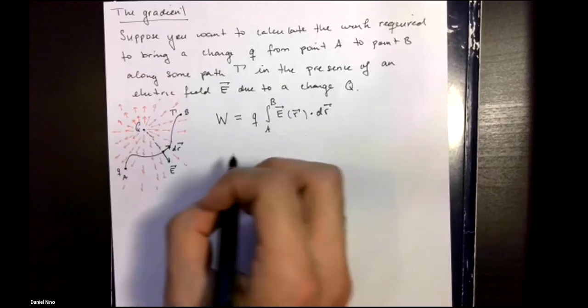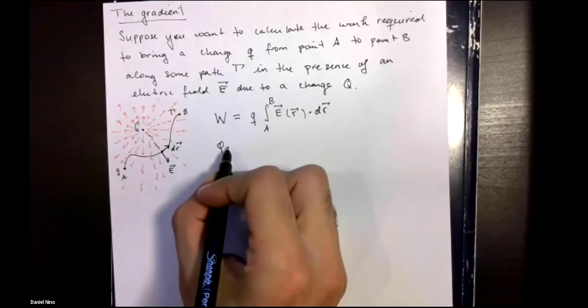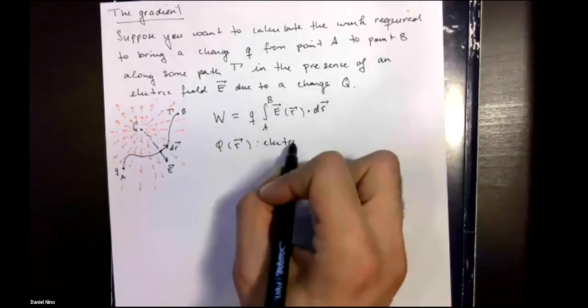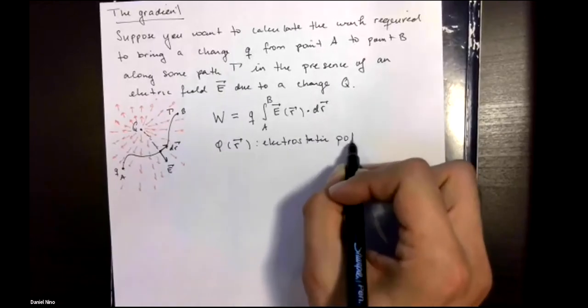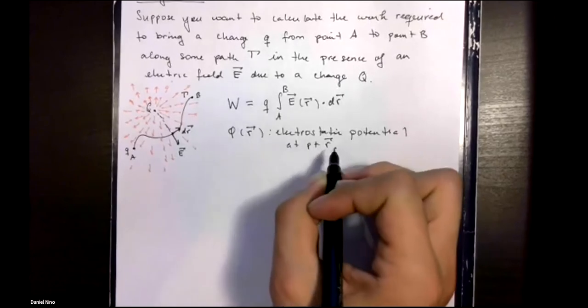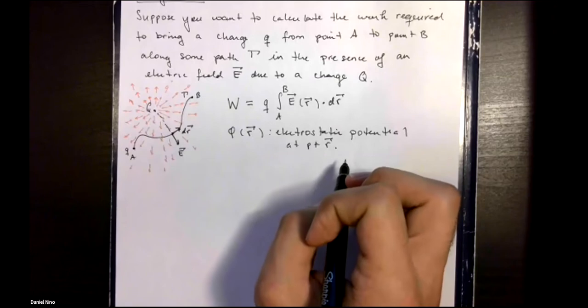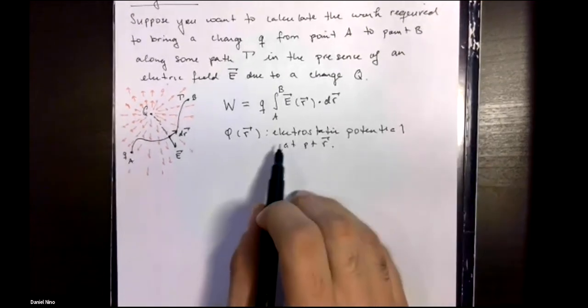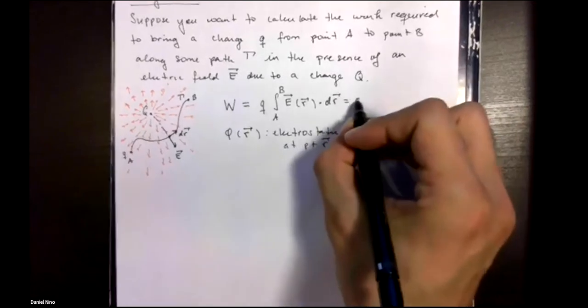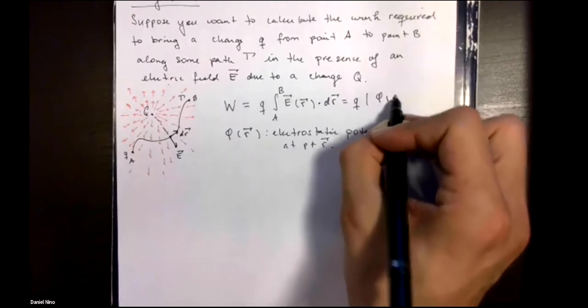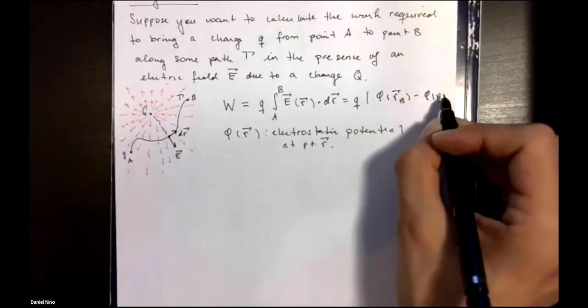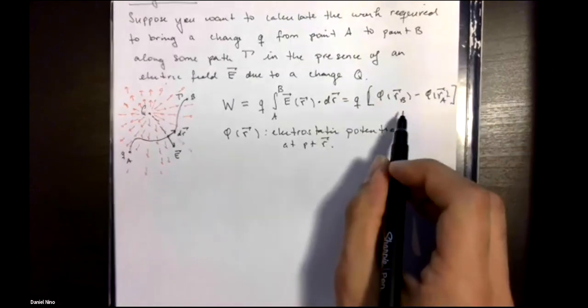One way of doing this is to introduce a new concept that we typically call phi of r, and this denotes the electrostatic potential at point r. This is basically the potential energy per unit charge, and what you found was the work needed to be done to take a particle from point A to point B was simply the difference of this electrostatic potential at the end points of your path.